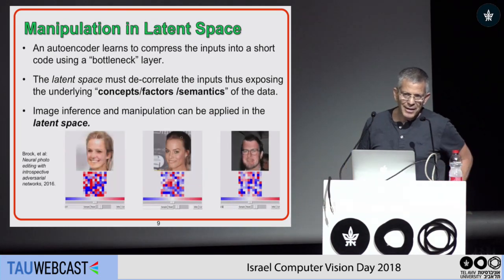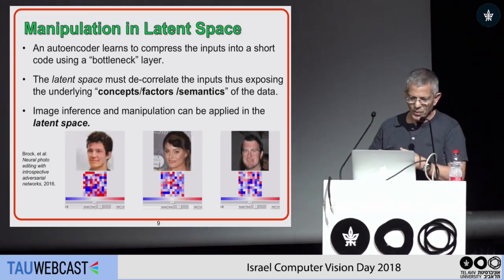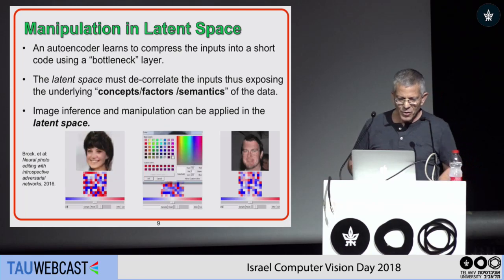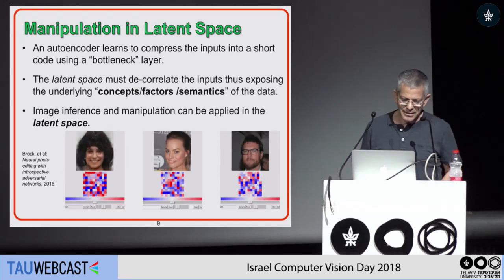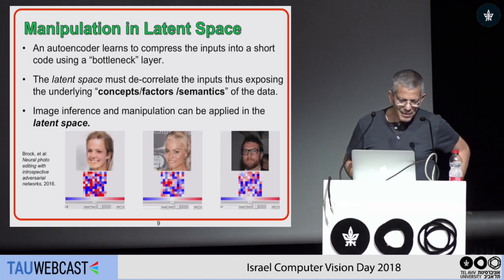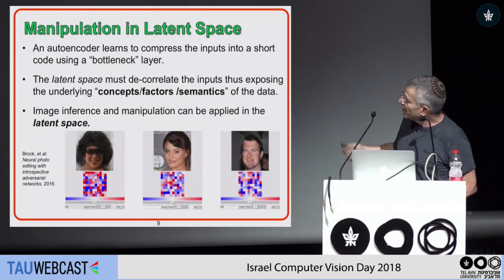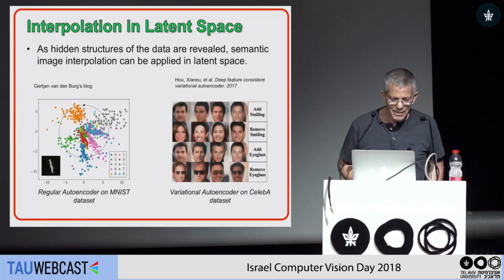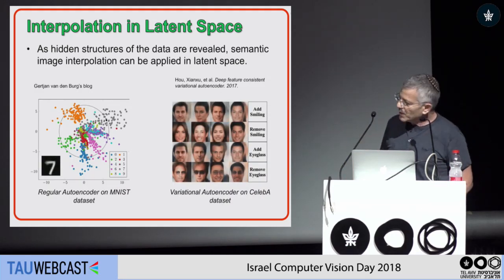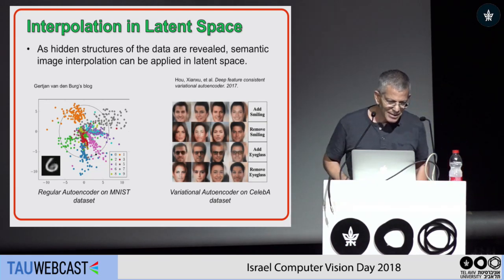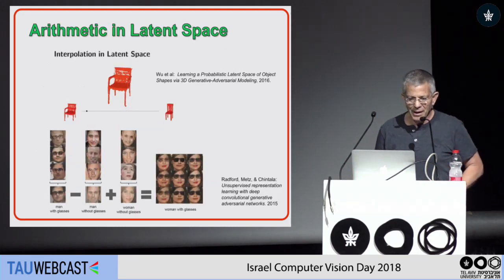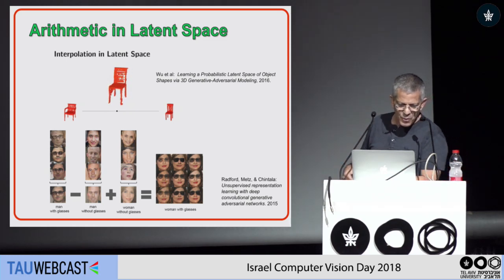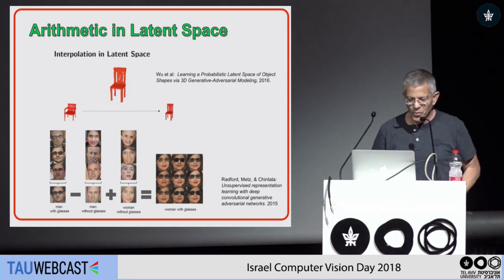The good thing about this latent space is that, in order to compress the data, the encoder must learn the structure, geometry, or correlation in the dataset. So people apply some manipulation in this latent space — for example, applying some constraints, or wandering in the latent space representing the MNIST data. People also do arithmetic in latent space: if you take a man with glasses, subtract a man without glasses, and add that to a woman, what you get is a woman with glasses.